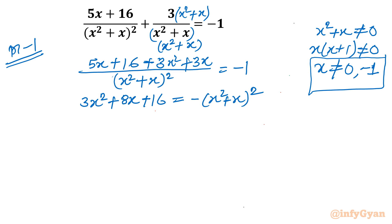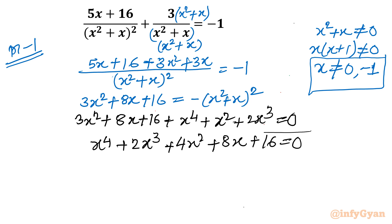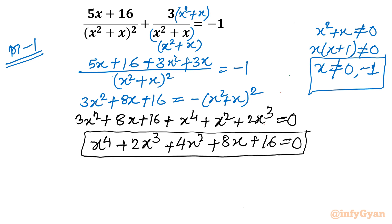Now I can bring all terms to the LHS. So I write 3x² + 8x + 16 plus (x² + x)² equals zero. Expanding (x² + x)² as x⁴ + 2x³ + x², and summing up all terms, I get the quartic equation: x⁴ + 2x³ + 4x² + 8x + 16 equals zero.